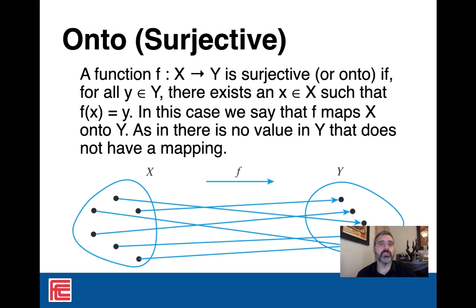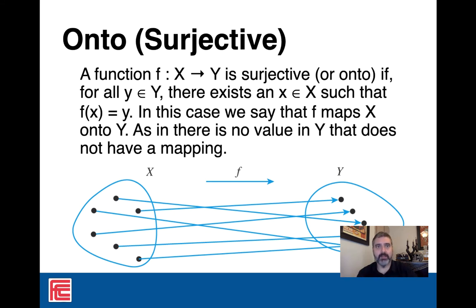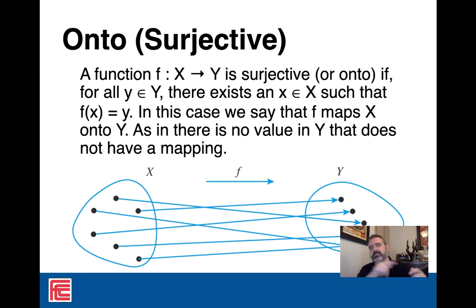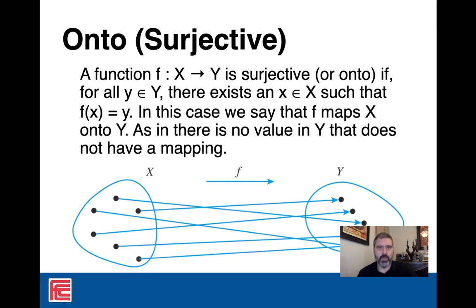Something is considered onto, or surjective, if every element of the codomain Y has something pointing to it — there's no element in Y that's unmapped. Every element of X still maps to some y, and collectively they cover every element of Y. Two x's can point to the same element of Y — that's perfectly acceptable — so long as every single element of Y is pointed to by at least one element of X.